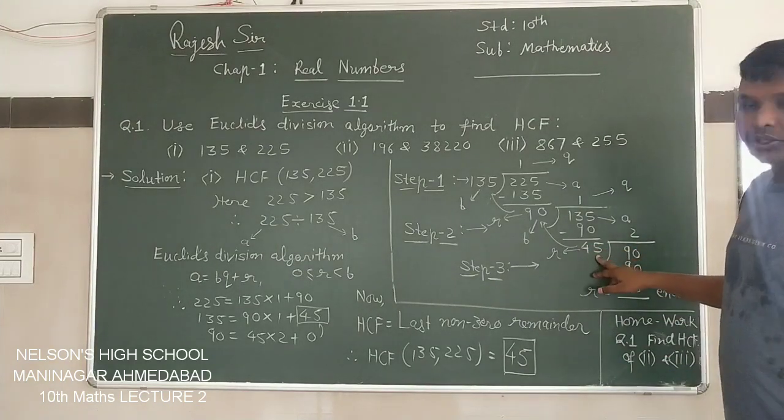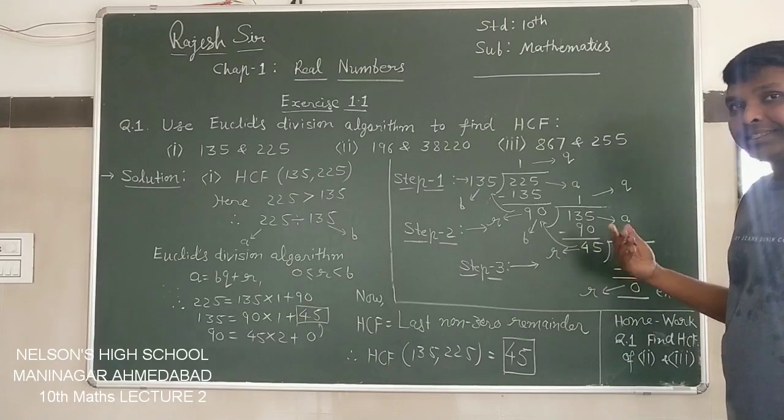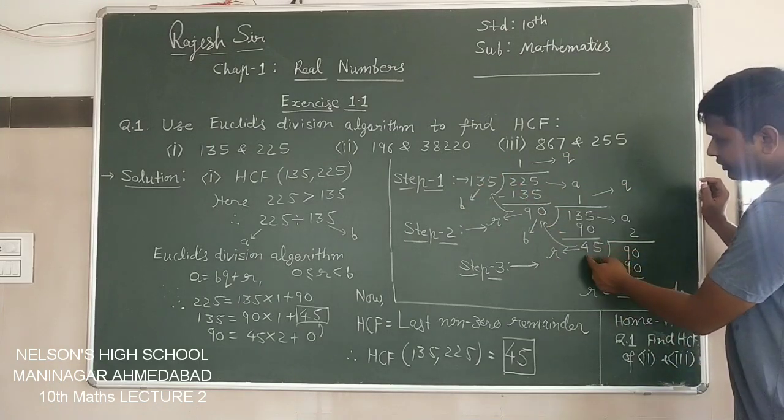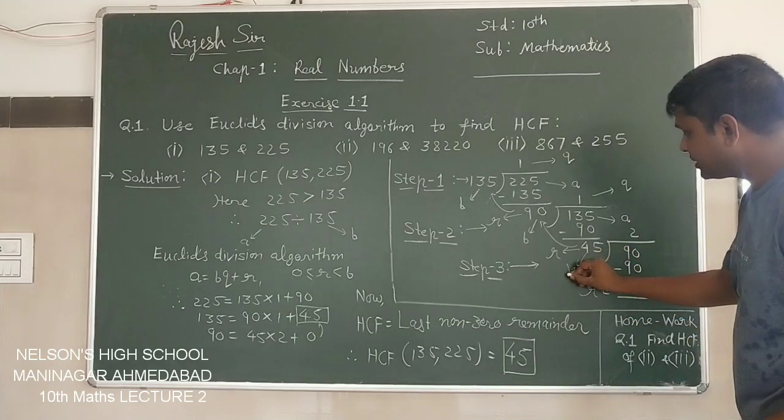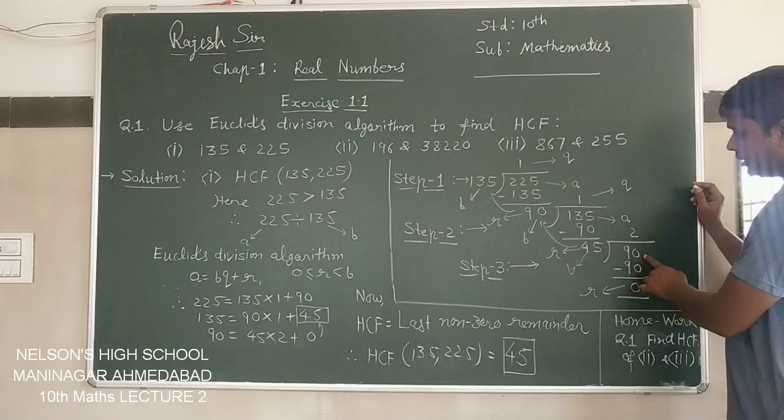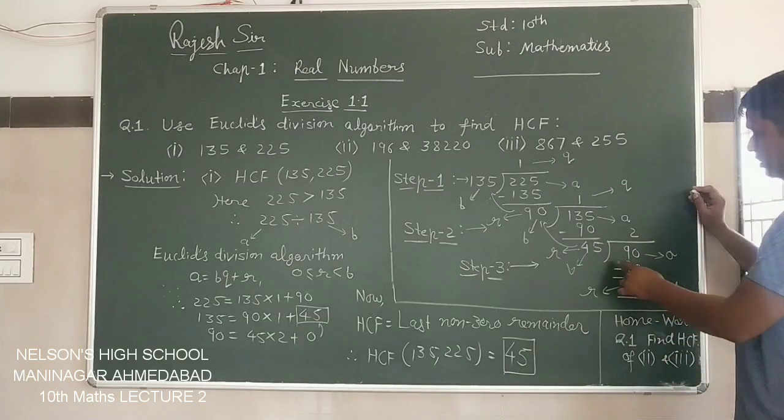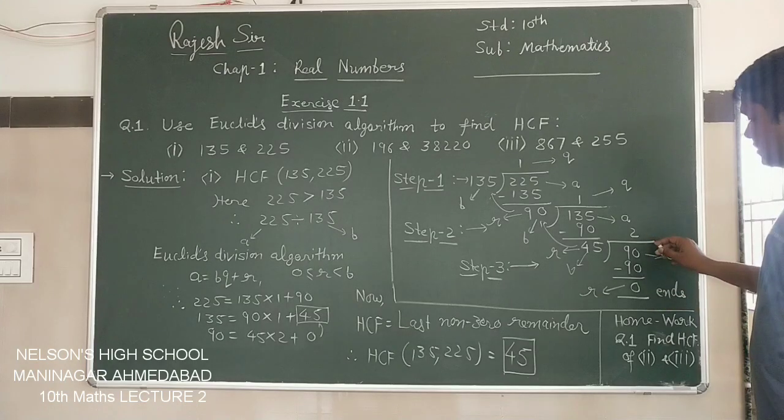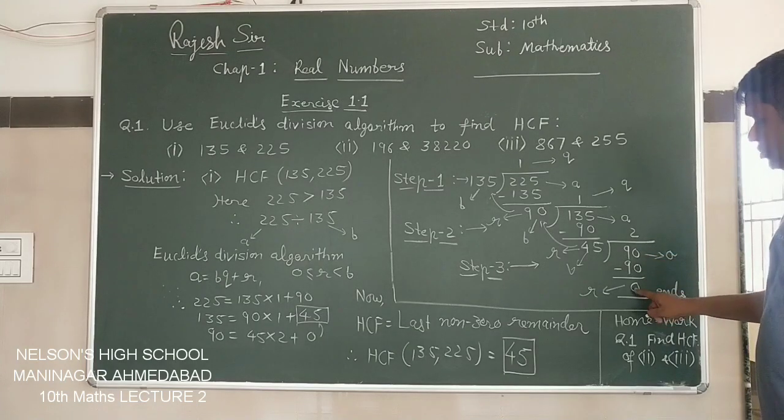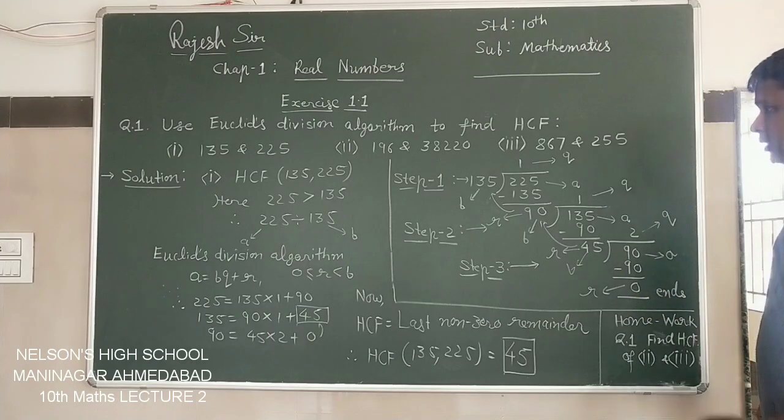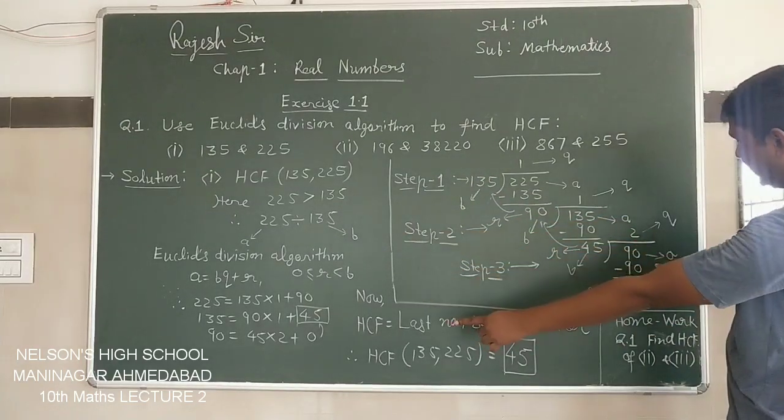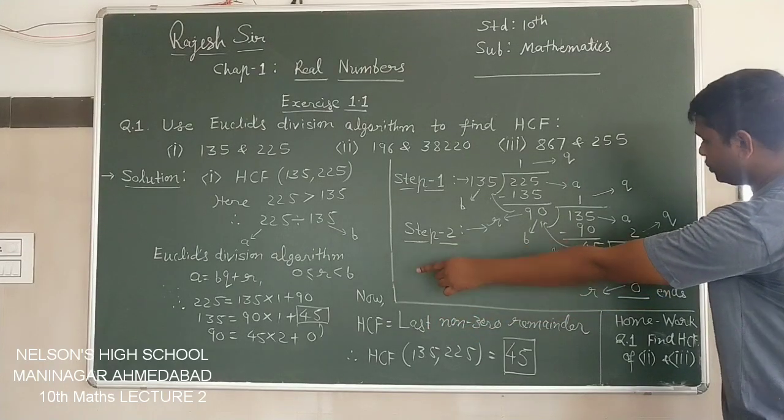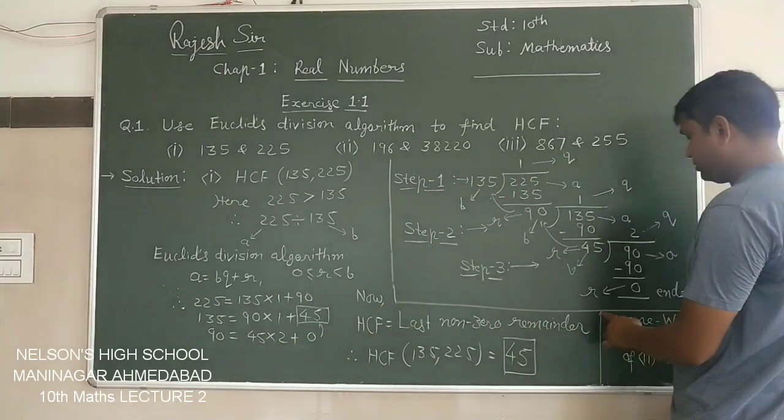Now again we did not get 0 here, so what we have to do? The next step, Step 3 comes here. Again the same as Step 2 we did using Step 1. The remainder 45 becomes divisor now, and divisor 90 becomes dividend, we denote it as A. So 45 divides 90 now. 45 twos are 90. 90 minus 90 is 0.